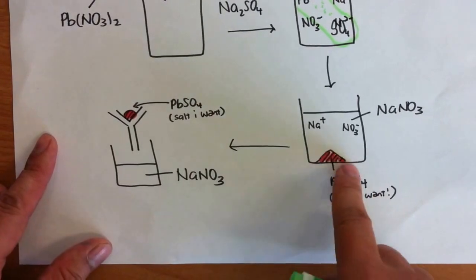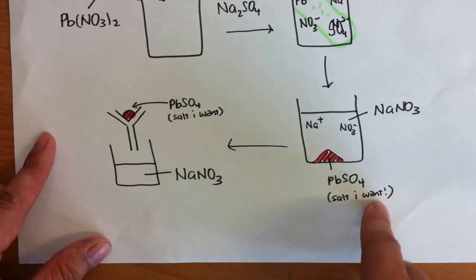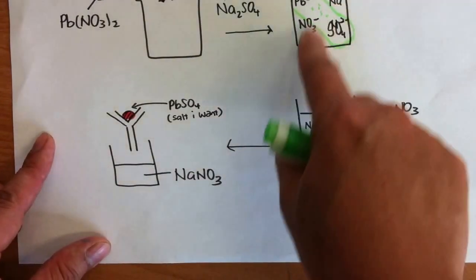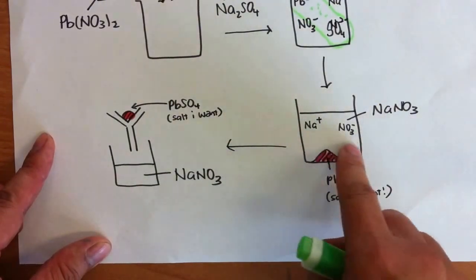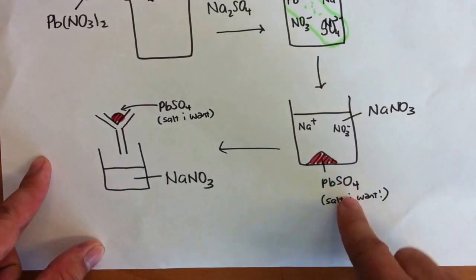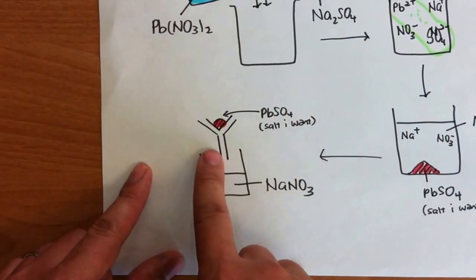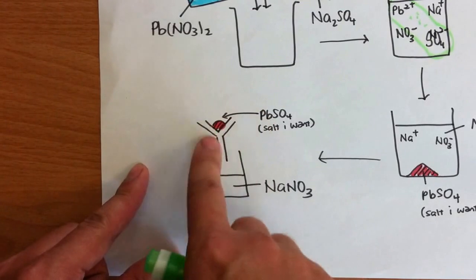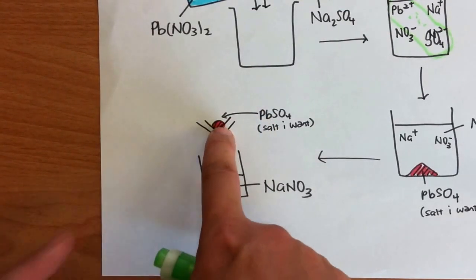And then lead sulfate will form a solid, something that I want. What's left behind will be ions in the solution and they are free to flow. And this is sodium nitrate. How do I remove sodium nitrate and lead sulfate? I use the process known as filtration. And this is how I get my lead sulfate.